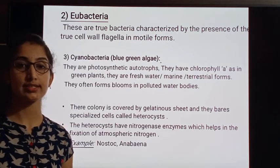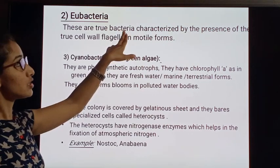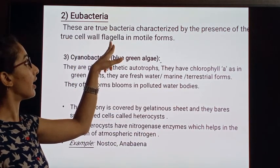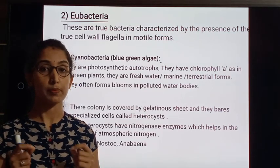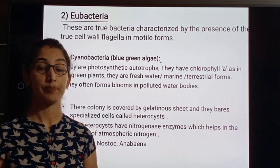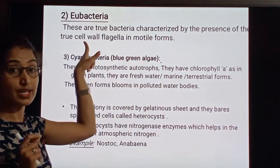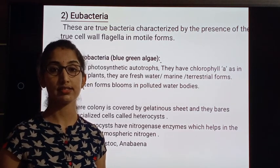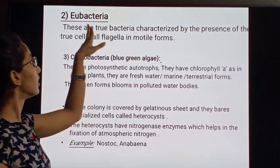Next we discuss eubacteria. Eubacteria means true bacteria. These are characterized by the presence of a true cell wall and flagella in motile forms. We call them eubacteria because 'eu' stands for true. These true bacteria are characterized by the presence of a true cell wall, and they also possess flagella for locomotion. Because of the presence of a true cell wall, we consider them as eubacteria.